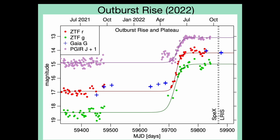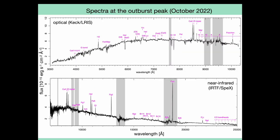We obtained spectra of the source in both the optical and near-infrared during this plateau. These spectra, taken near maximum brightness in October 2022, have both emission and absorption features. I'd like to draw your attention first to these CO bands seen in emission — this is quite typical for an EX Lupi-type outburst. We also see emission from hydrogen lines, including Brackett, Paschen, and Balmer series lines.